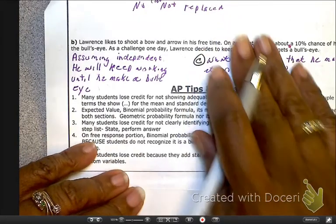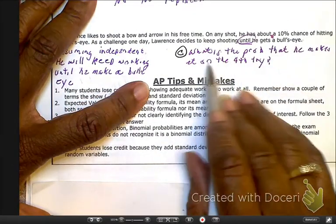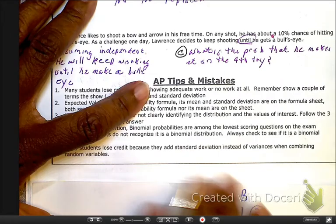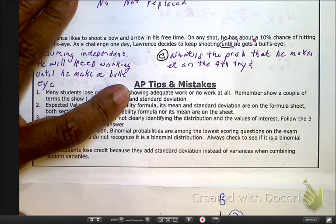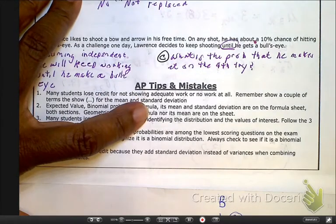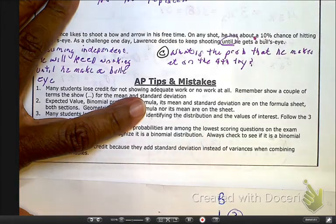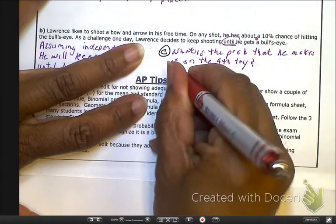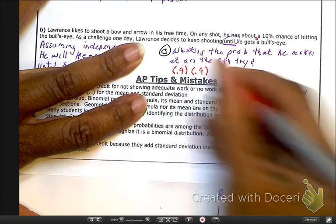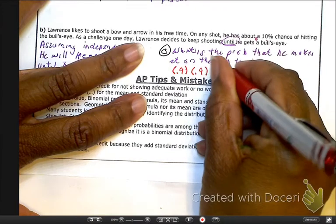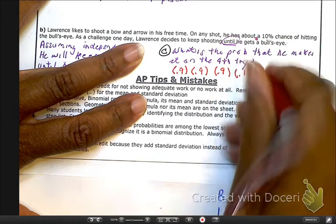Now I wanted to make up a problem. So as you read my sloppy handwriting, what's the probability that he makes it on the fourth try? So go ahead and pause this and write it down. So now, let's see. He has a 10% chance of hitting it, which means he has a 90% chance of not hitting it. So he failed. That's the first try. He failed. That's the second try. He failed, and finally succeeded. That is your fourth try.